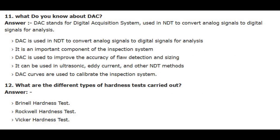Number 11. What do you know about DAC? Answer. DAC stands for Digital Acquisition System, used in NDT to convert analog signals to digital signals for analysis. It is an important component of the inspection system and is used to improve the accuracy of flaw detection and sizing. DAC can be used in ultrasonic, eddy current, and other NDT methods. DAC curves are used to calibrate the inspection system.